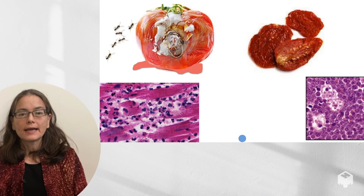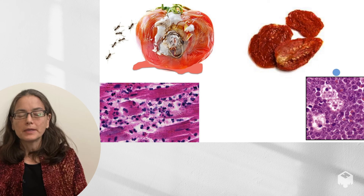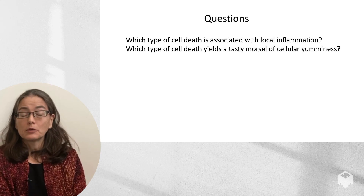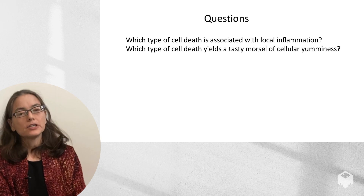And then just to bring that image together — here you see the compare and contrast: a leaky, juicy, nasty tomato compared with necrotic cardiac myocytes, and then some delicious sun-dried tomatoes being gobbled down by macrophages. So here are two questions for you: Which type of cell death is associated with local inflammation? And which type of cell death yields a tasty morsel of cellular yumminess?